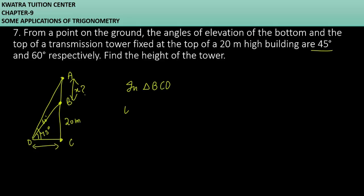Let it be x. What do we have here? Tan 45 degrees is equal to perpendicular over base, which is BC over DC. How much is tan 45 value? BC is 20. DC in this case is unknown. You will get DC as 20 into 1, which will be 20 meters.